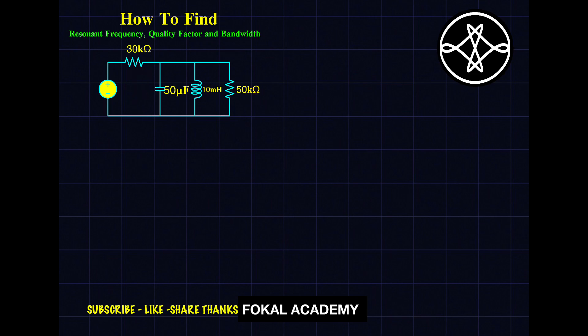Then the circuit becomes a parallel RLC circuit, so then we can easily find quality factor, resonance frequency, and bandwidth. Now how to bring this element into the parallel? For that we have one technique that is called source transformation technique.